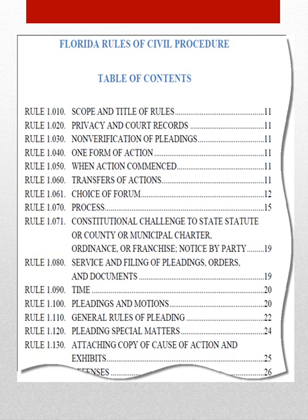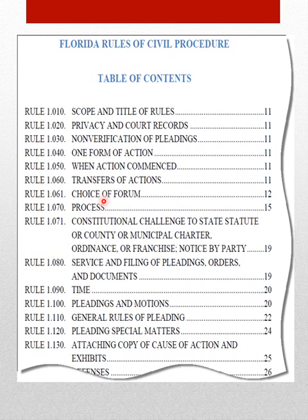If you click on that link I provided, you will see that the first page opens just like any other book — to a table of contents. The rules are numbered, the page of the rule is in the right-hand column, and this is the title of the rule. For example, Rule 1.010 is titled Scope and Title of Rules and can be found on page 11 of the PDF file called the Florida Rules of Civil Procedure. It's a good idea to use a table of contents for your research to see what you're doing.